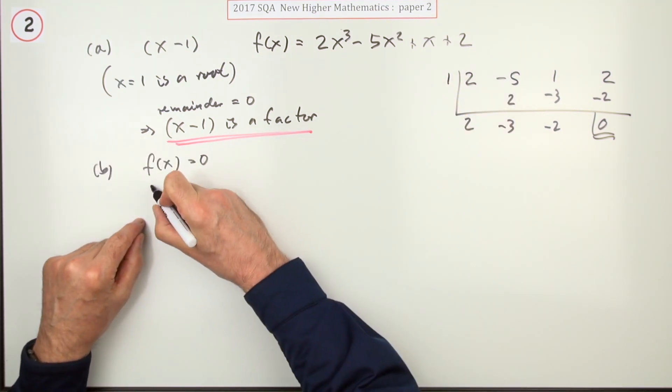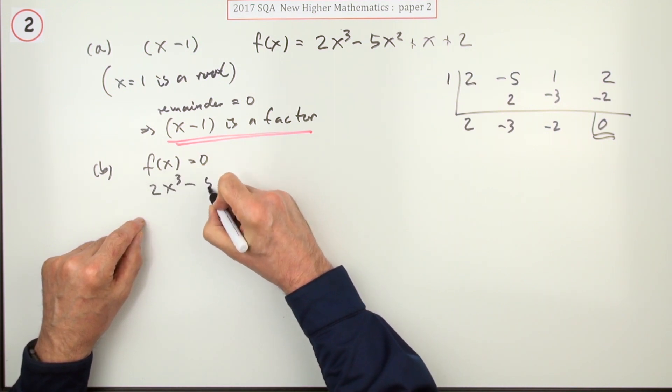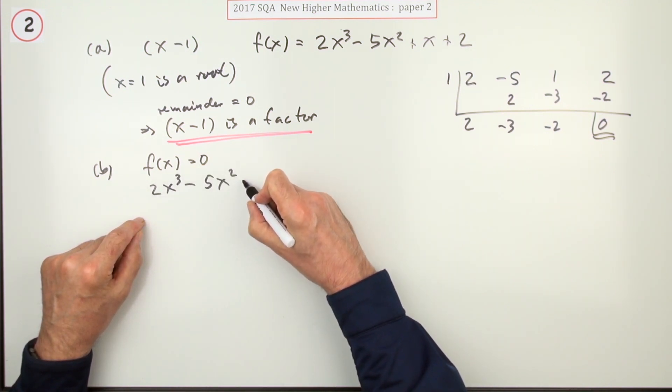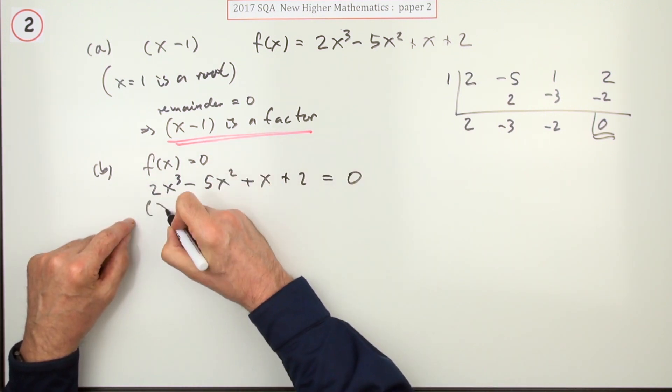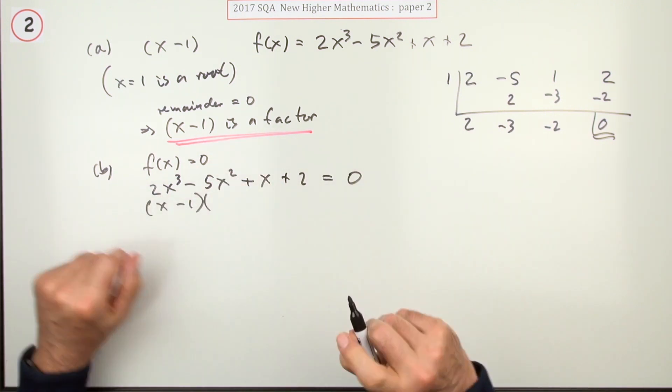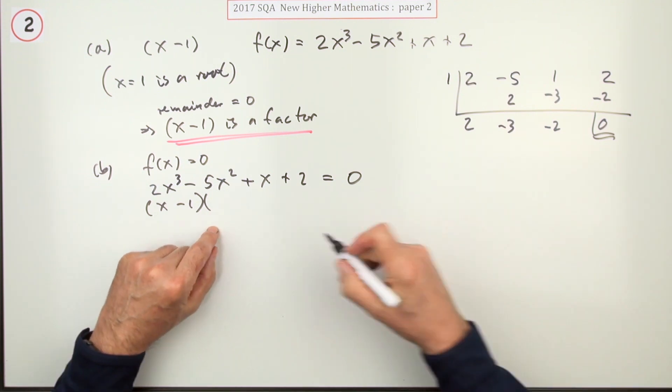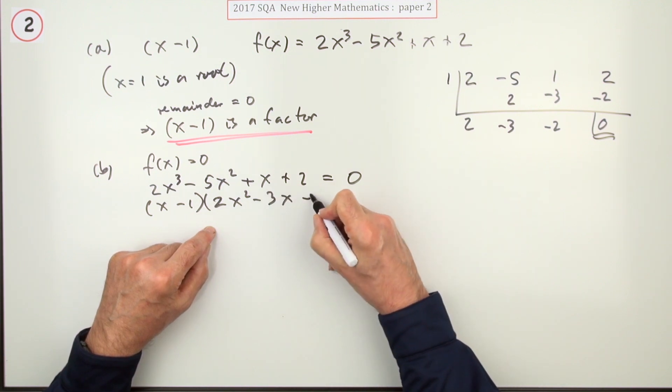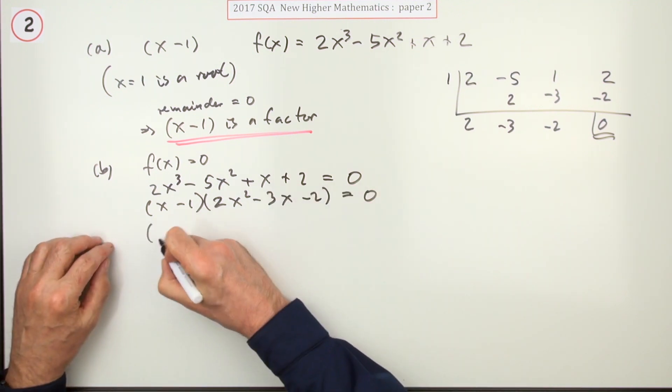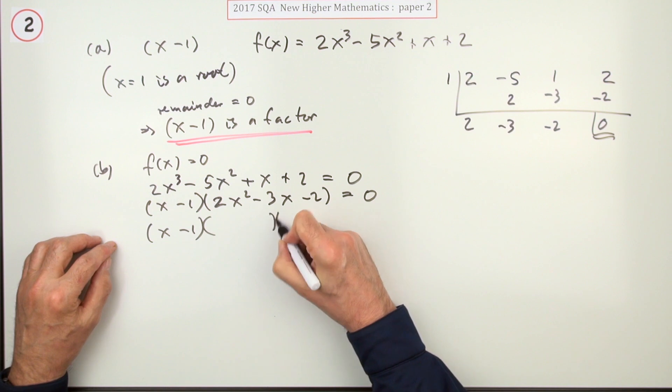Hence solve f(x) equal to zero. Well, that just means this equals zero. I'll write it out though: 2x³ - 5x² + x + 2 = 0. And I know a factor already, rather I know a linear factor already, and I know the remaining quadratic factor is 2x² - 3x - 2 = 0.